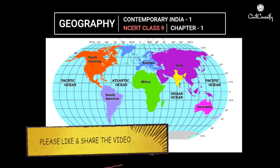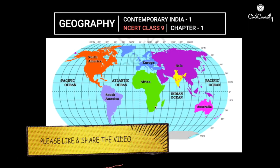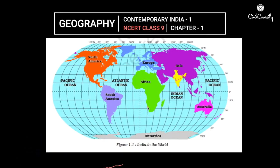This is the location of India. Before focusing on India, let's look at the continents: North America, South America, Africa, Europe, Asia, and Australia. Important oceans are the Pacific Ocean, Atlantic Ocean (North and South), Indian Ocean, and again the Pacific Ocean, since the globe is round.